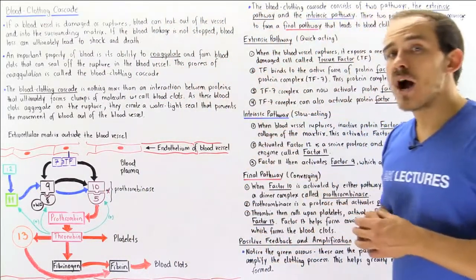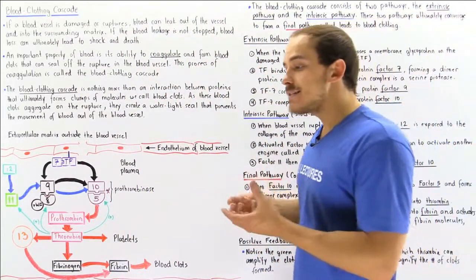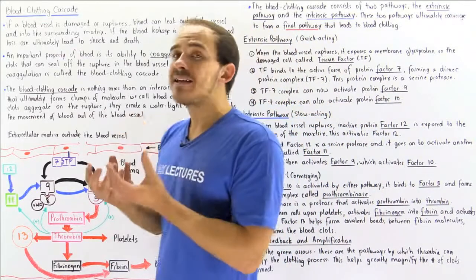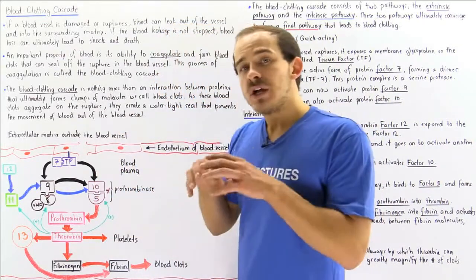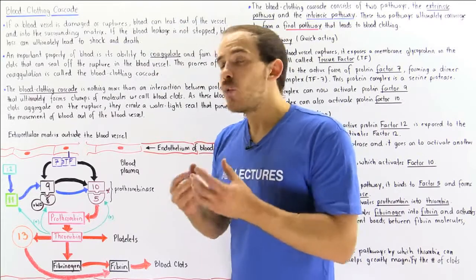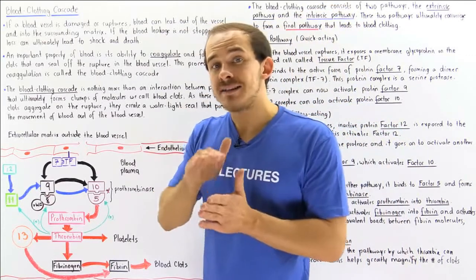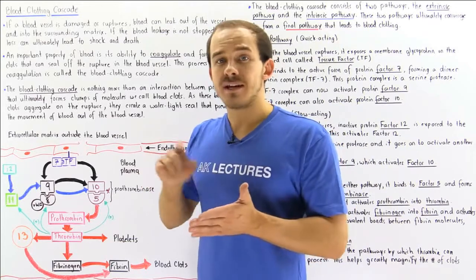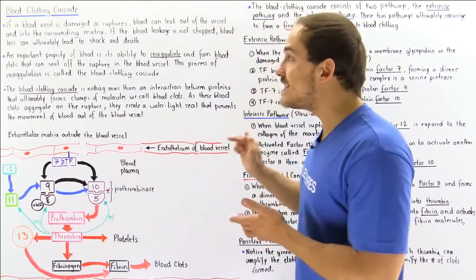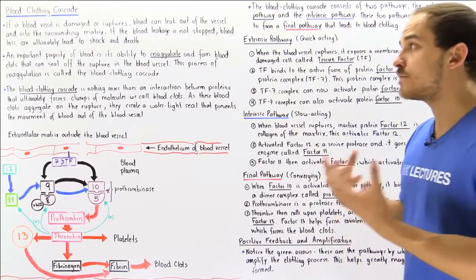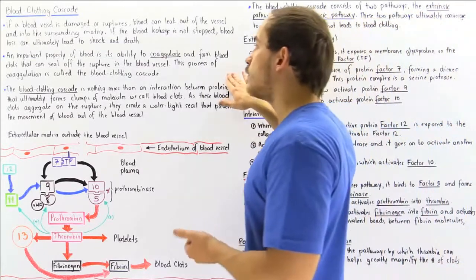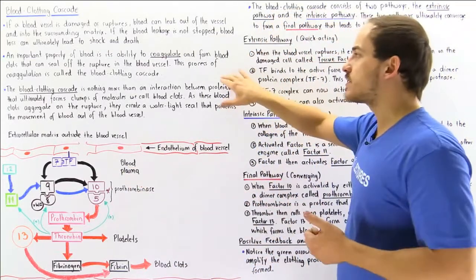An important property of our blood is its ability to coagulate, and what that means is to form these clumps we call blood clots. These blood clots can bind to these ruptures, aggregate along the ruptures, and they can seal off that rupture in the blood vessel. This prevents the leakage of our blood out of that blood vessel.